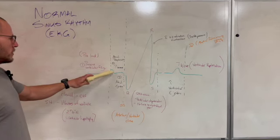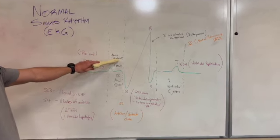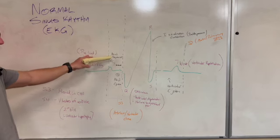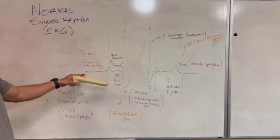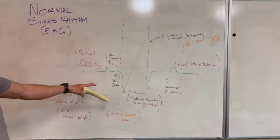Then here we have the P wave and this is where the atriums become depolarized. And then after this happens right here at the end of this line, this is where atrial ejection happens. So the blood that's in the atrium is now going out.